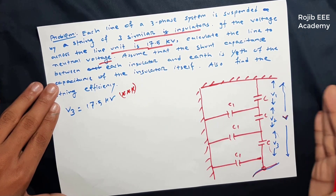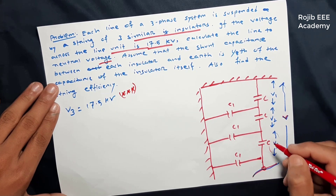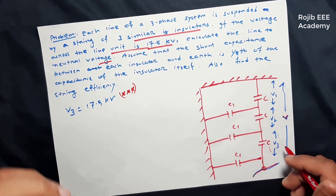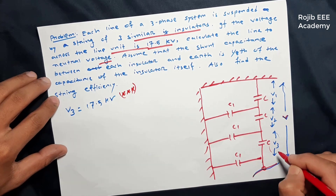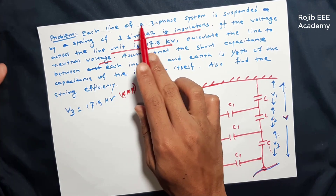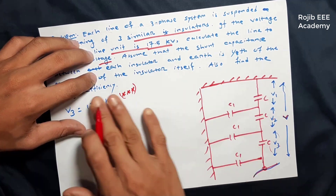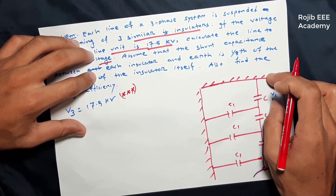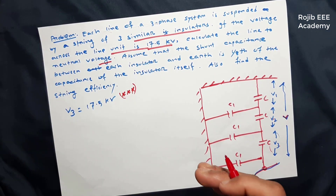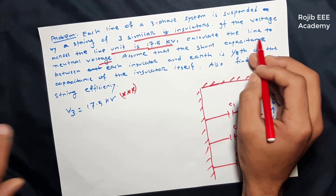Why is V3 significant? This line has a cluster environment. The voltage V3 can perform balancing based on frequency. We will transfer this voltage and relate it accordingly. So, we will have to calculate the line-to-neutral voltage.